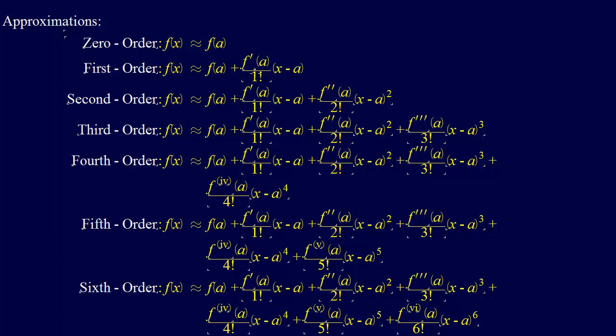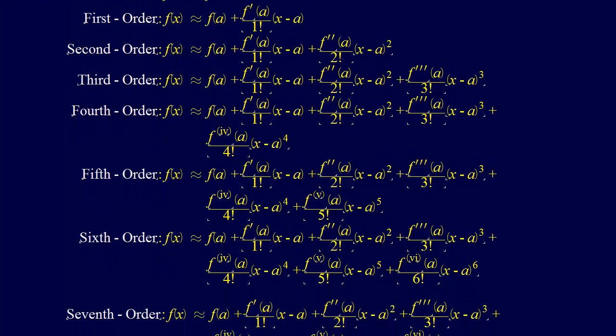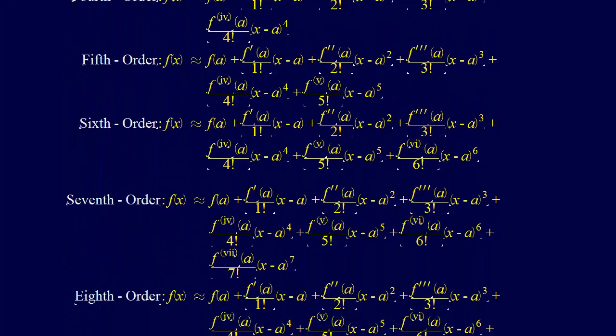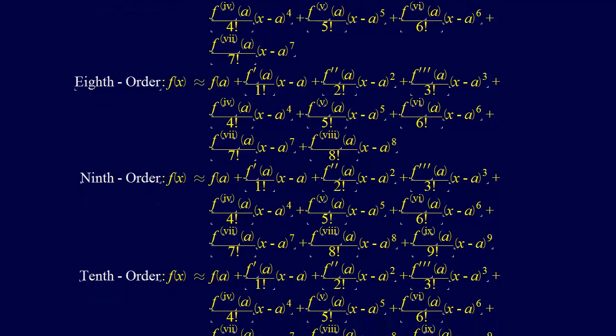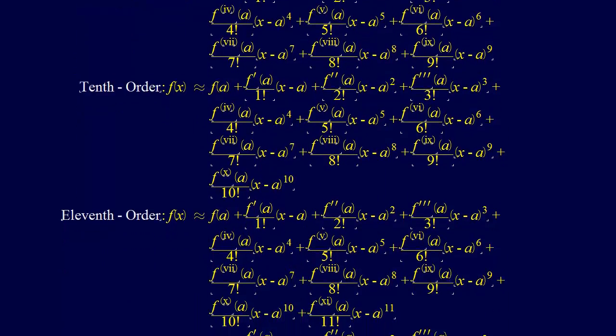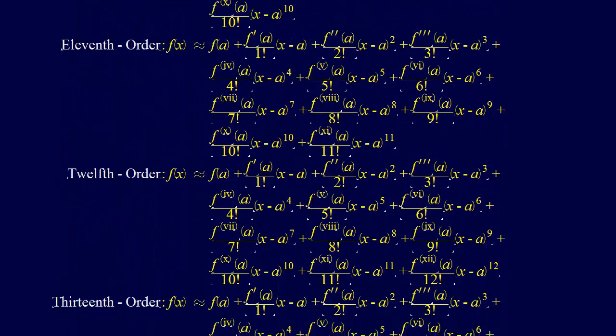And this is written out for the general case of the Taylor series, not just for when a equals 0. We have this approximation, and it continues on, and I've shown the terms all the way down until we get to the eleventh order term. Excuse me, the thirteenth order term.